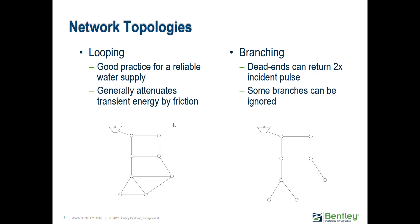There are two main types of network topologies: looped systems and branched systems. Looping generally attenuates transient energy more since waves have different paths to travel and tend to dampen out better. In branched systems, when a wave hits a dead end it can return with the opposite sign — basically two times the incident pulse.